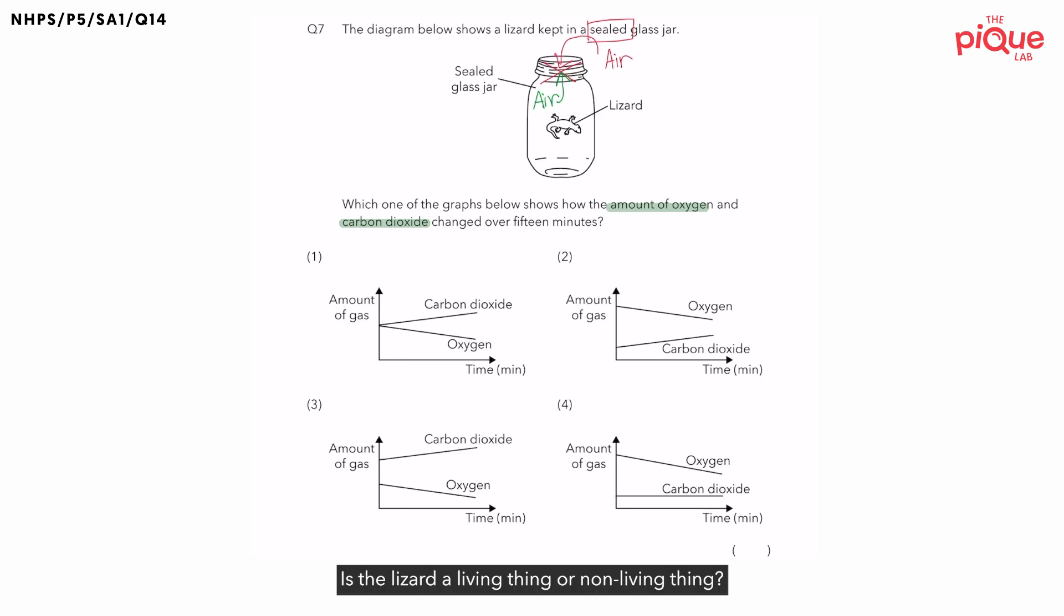Let's think about it. Is the lizard a living thing or non-living thing? The lizard is a living thing. And all living things need air, food, and water to survive. But for this particular question, we will be focusing on air. So which gas, oxygen or carbon dioxide, would the lizard want to take in? Lizard will want to take in oxygen to carry out respiration. And during respiration, what gas is given out? Carbon dioxide.